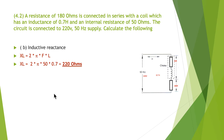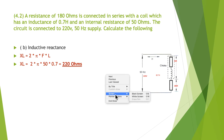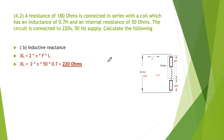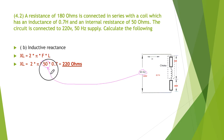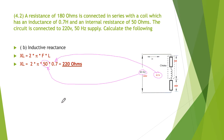The next thing is the inductive reactance. The formula for inductive reactance is 2πFL. They told us 50 hertz and 0.7 of a Henry in the inductor. So it was just a matter of doing the math — the XL, or inductive reactance, is 220 ohms.